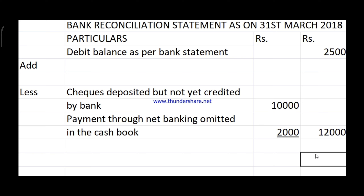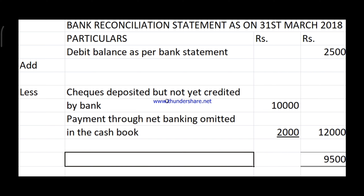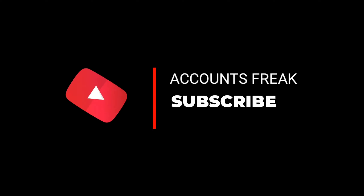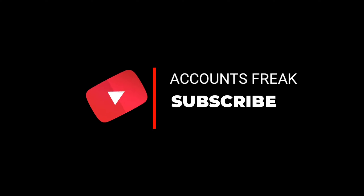Since 2,500 minus 12,000 is not possible, we reverse it and do 12,000 minus 2,500, which equals 9,500. Because we reversed it, the debit balance — which is an unfavorable balance as per the bank statement — becomes a favorable balance as per the cash book. When you start with the bank book, you end with the cash book. That completes this sum.